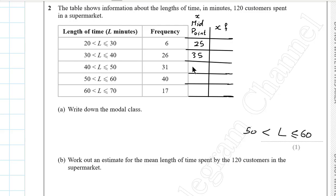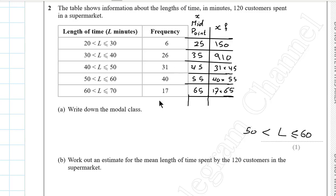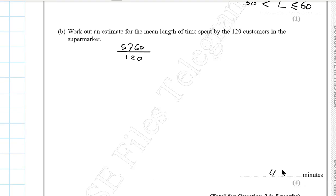The midpoints for the remaining classes are 45, 55, and 65. Multiplying each midpoint by its frequency — for example 25 times 6 equals 150 — and summing all these products gives 5760. Dividing by the total frequency of 120, the estimated mean is 48 minutes.